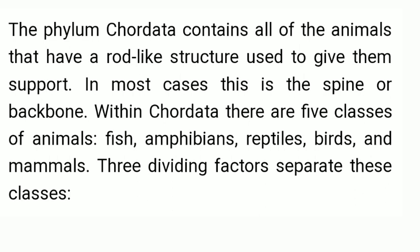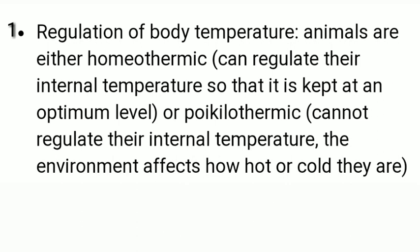Three dividing factors separate these five classes. The first factor is regulation of body temperature. Animals are either homeothermic — meaning they can regulate their internal temperature at an optimum level, like human beings whose body temperature is 37 degrees Celsius — or poikilothermic, which cannot regulate their internal temperature, so the environment determines whether they are hot or cold.